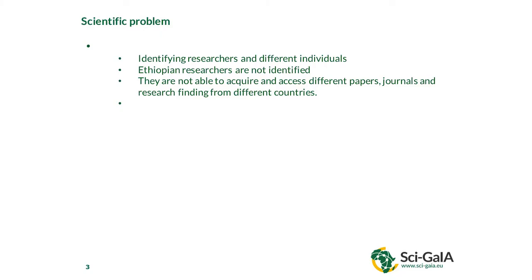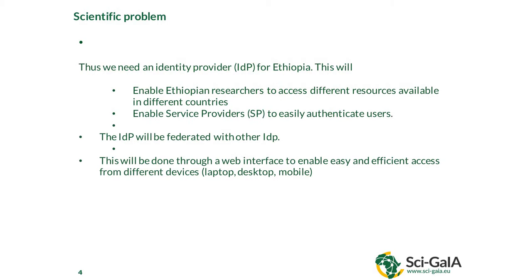The scientific problem we have is we have different researchers here in Ethiopia and different individuals from different organizations, but these researchers are not identified. So they cannot access different journals, different papers, different findings from different universities and even from different repositories.